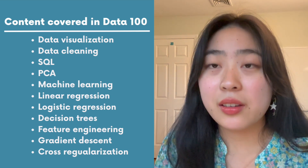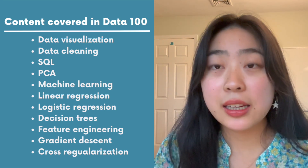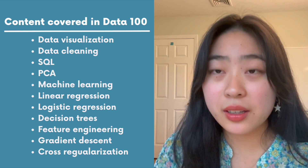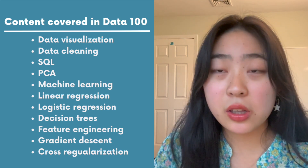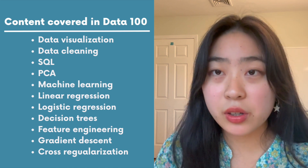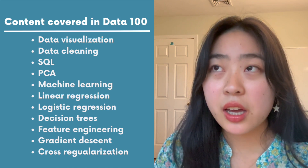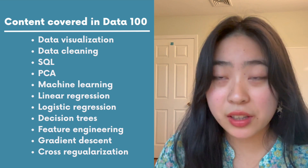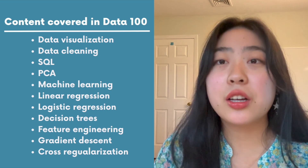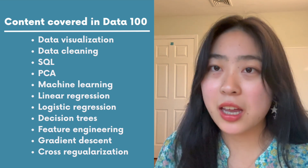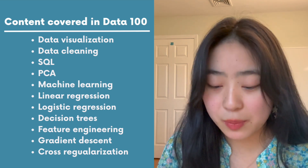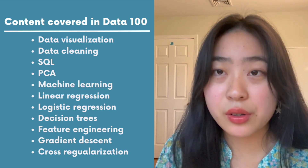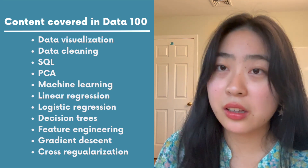Data 100 covers things like data visualization, data cleaning, SQL, principal component analysis, machine learning, linear regression, logistic regression, decision trees, feature engineering, gradient descent, cross-validation — just all of those important data science and machine learning concepts. Due to the strike, we did not fully cover logistic regression, decision trees, and clustering.